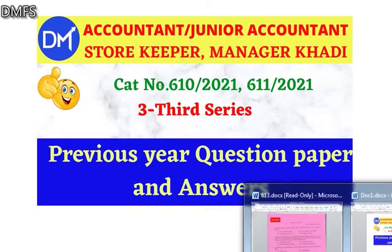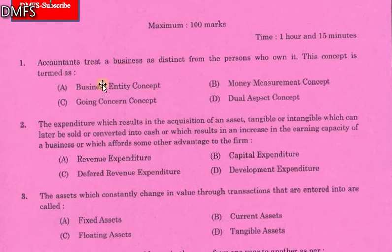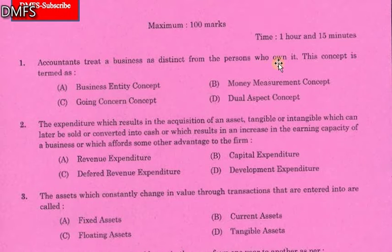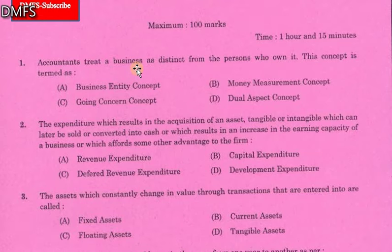First question: the accountants treat a business as distinct from the person who owns it. The concept is treated as option A, business entity concept. So the answer is option A, business entity concept. Owner and business are separate entities — a separate legal entity.